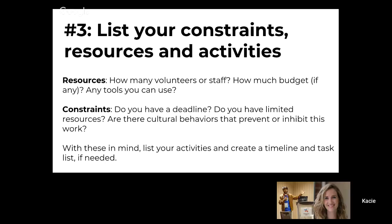With constraints, you're thinking about: do you have a deadline? Is there some kind of limit to the resource? And are there cultural behaviors that would prevent or inhibit this work? For these pilots, I'd recommend planning something you can test in the next six months to get started quickly. If you receive a grant in this round, plan a project from March until June — March is when you'd receive funding, though you could start work ahead of time on things that don't need funding.